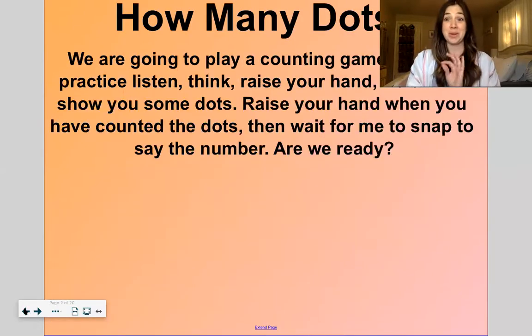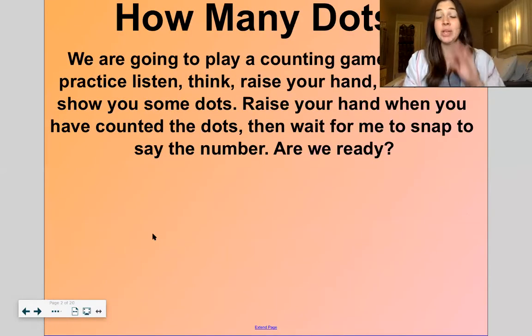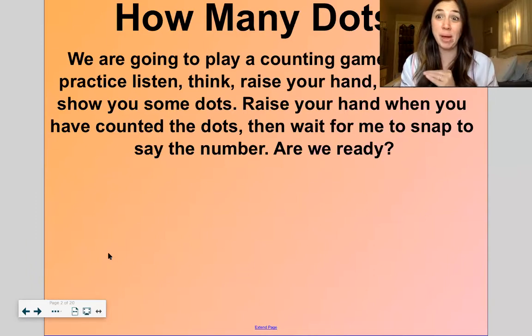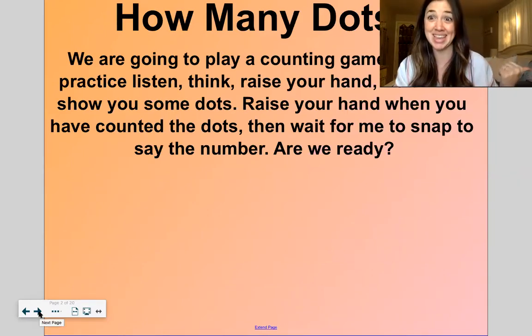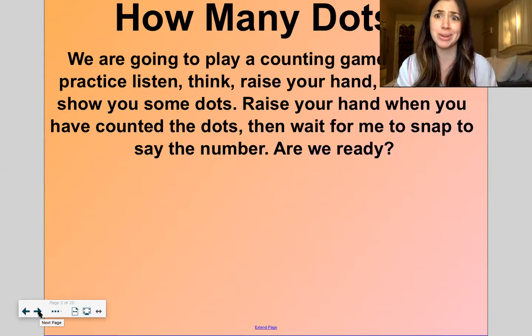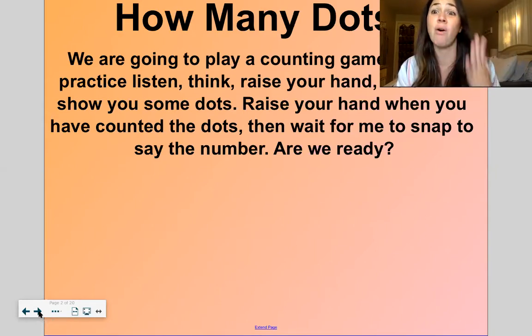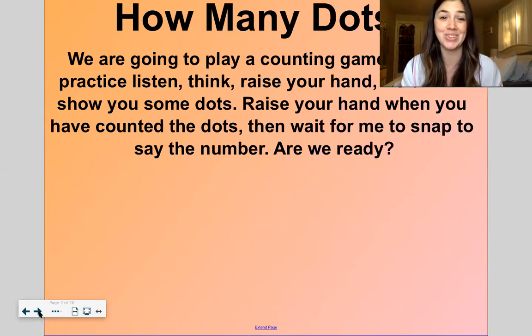Okay so we're gonna practice subitizing again. Usually when we're in the classroom I flash a card really quick. So today I'm just going to show you the card that has a dot on it on the computer here and then when you know how many dots there are just blurt it out okay. This is called subitizing. Remember we talked about this last lesson. It's such an important skill to be able to just look at a group of objects and know how many there are without counting. We as adults do that all the time. This is a really important skill for kiddos to learn too.